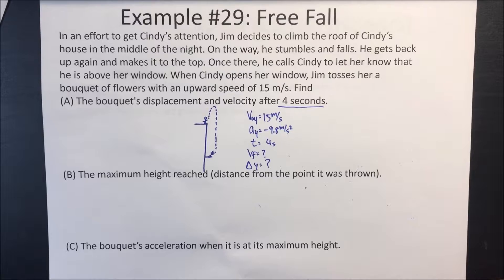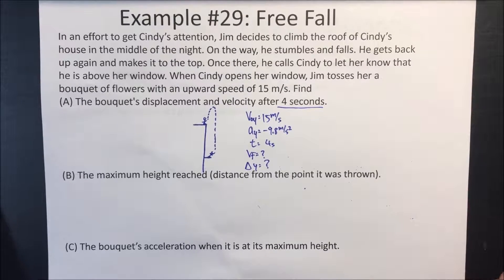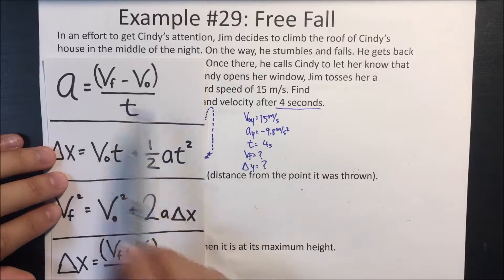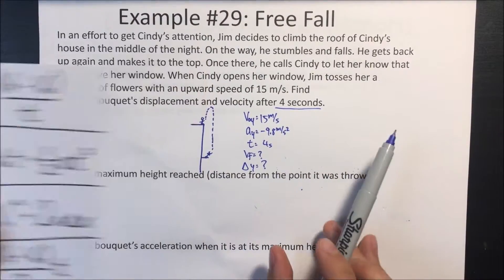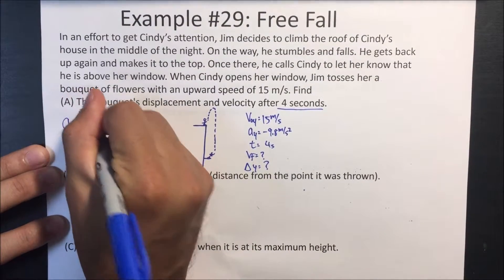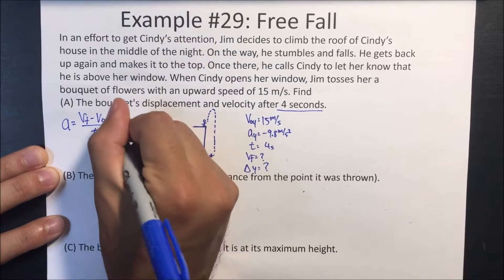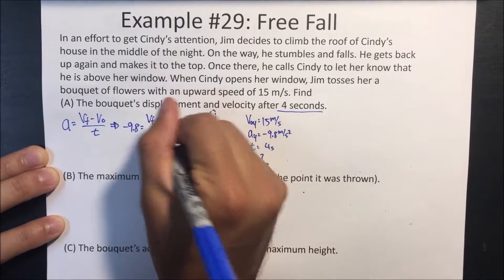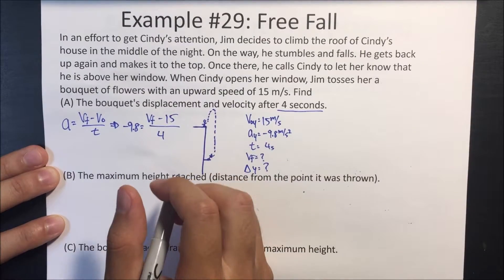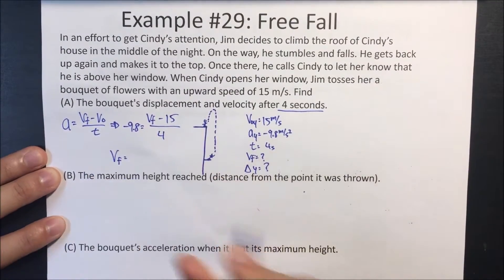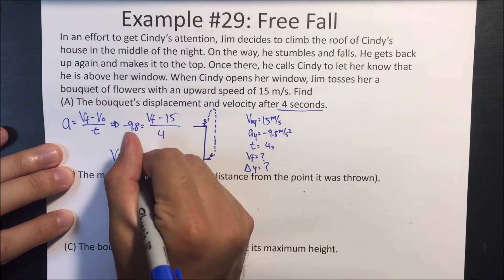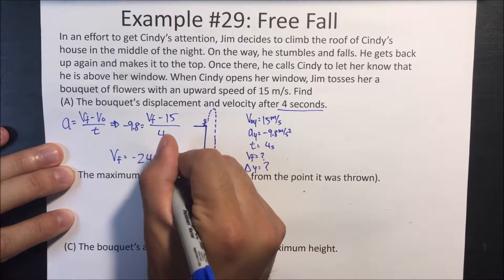Let's look for the final velocity first. We look at the formula sheet and find that acceleration equals V final minus V initial over T. Plugging things in: negative 9.8 equals V final minus 15, divided by 4 seconds. Doing the math, the velocity is equal to negative 24.2 meters per second.